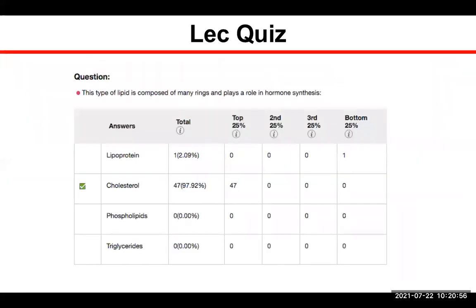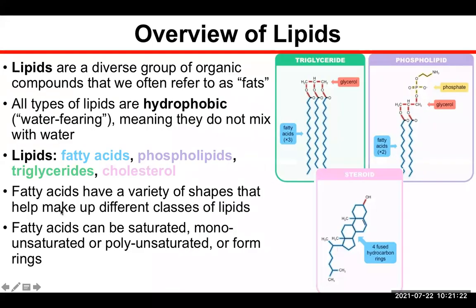Lecture fourteen: this type of lipid is composed of many rings and plays a role in hormone synthesis. Not everyone has completed the quizzes for this week — you have until Friday, but you'll be at a disadvantage without them. The different kinds of lipids: mainly triglycerides, phospholipids, and steroids. They all have different functions, but the key conserved molecule in all of them is fatty acids — typically long chains. If they have kinks in them, that indicates they're unsaturated, meaning they don't have as many hydrogens attached. When it comes to steroids such as cholesterol, the fatty acids change shape into fused carbon rings.